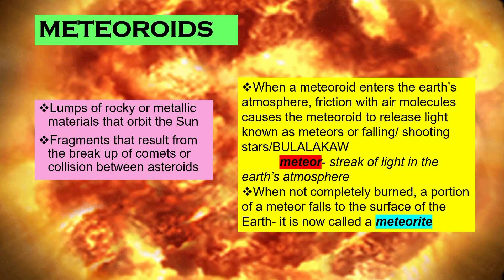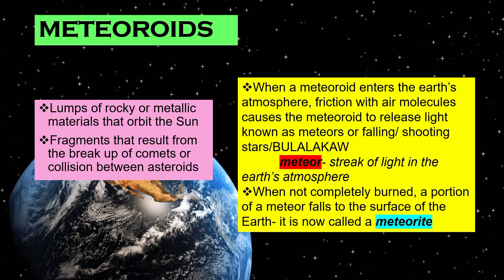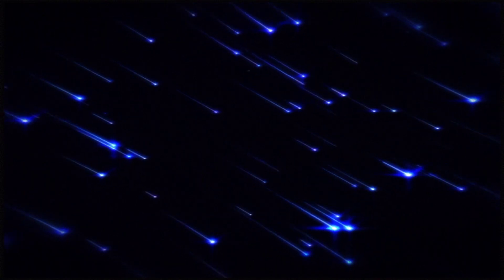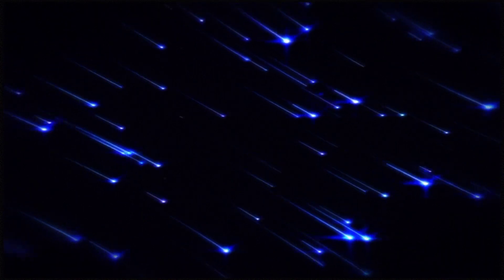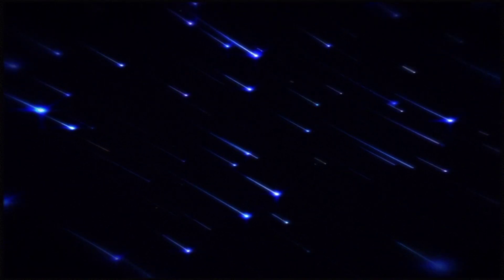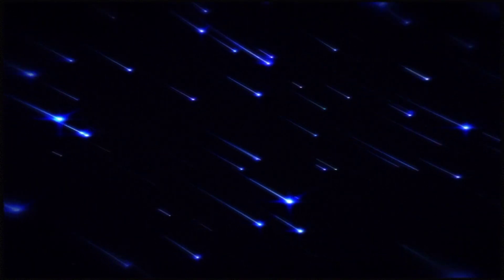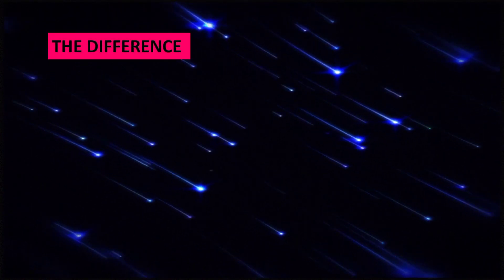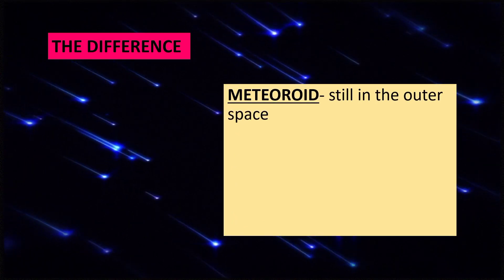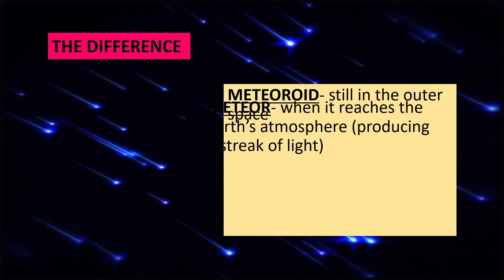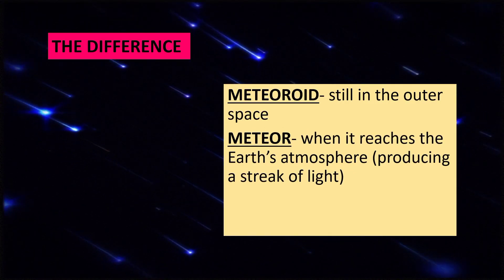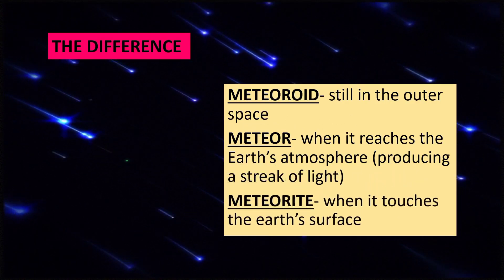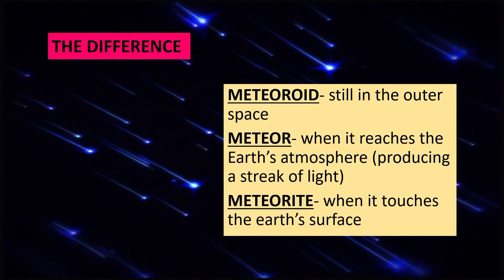Sometimes a meteor is not completely burned, so a part of it falls onto the surface of the Earth. We don't call it a meteor anymore, but we call it a meteorite. So meteoroids, meteors, and meteorites — are they the same or do they have differences? They do have differences, and the difference is where we can find them, or their location. We call it a meteoroid if it is still in outer space. Once it reaches the Earth's atmosphere, it will now be called a meteor. And once it touches the Earth's surface, it is now called a meteorite.